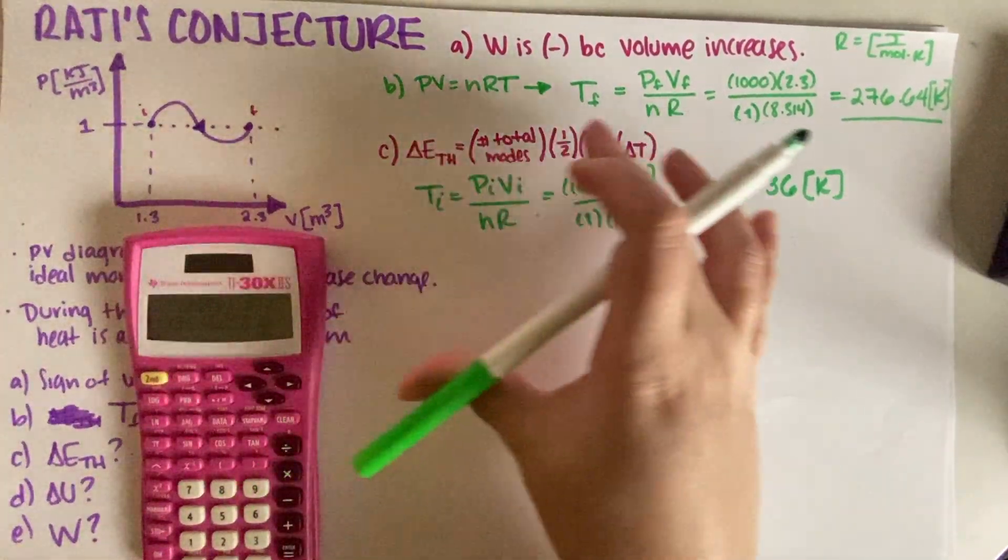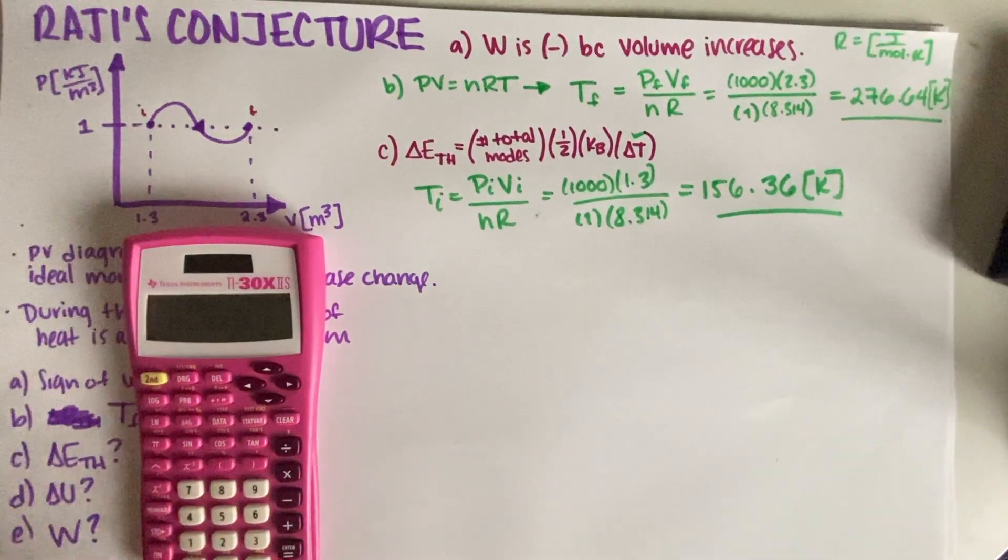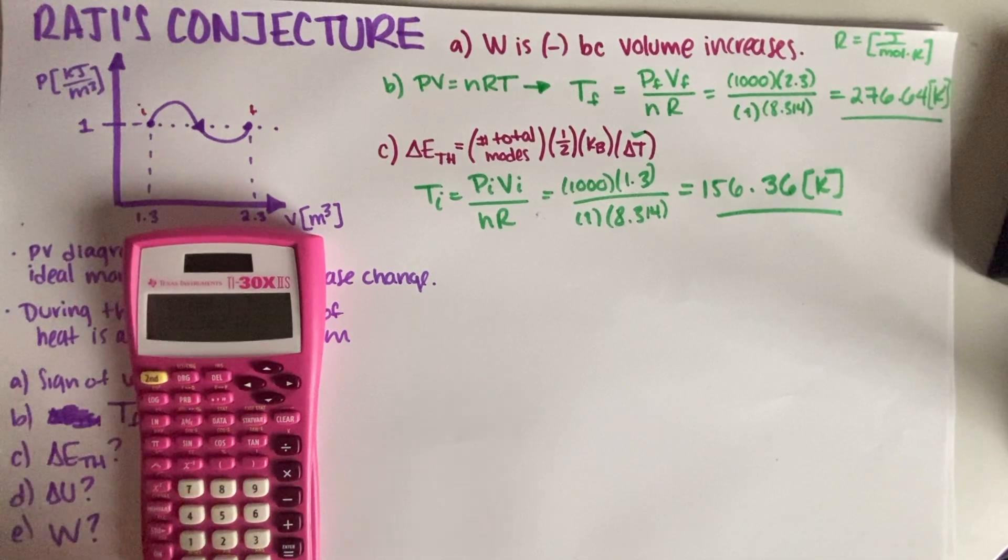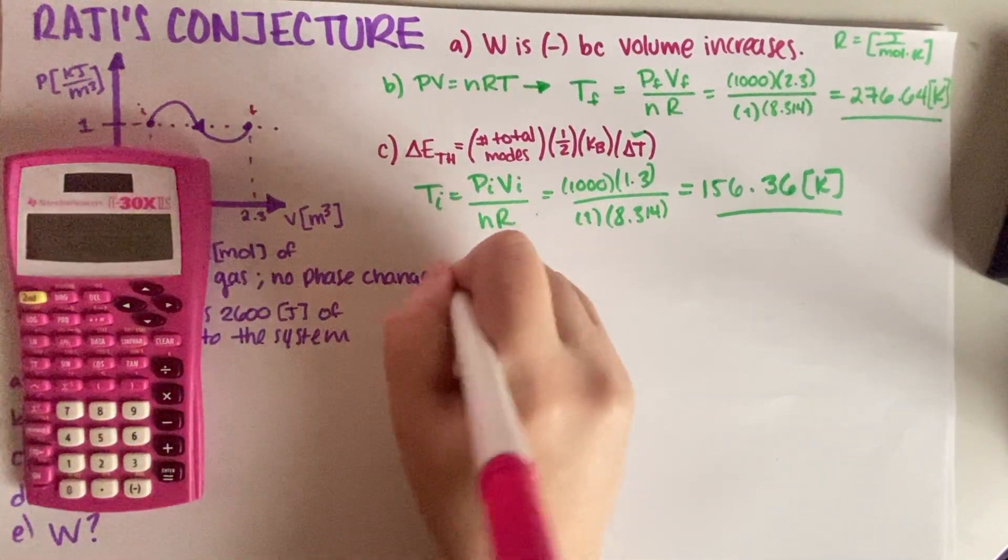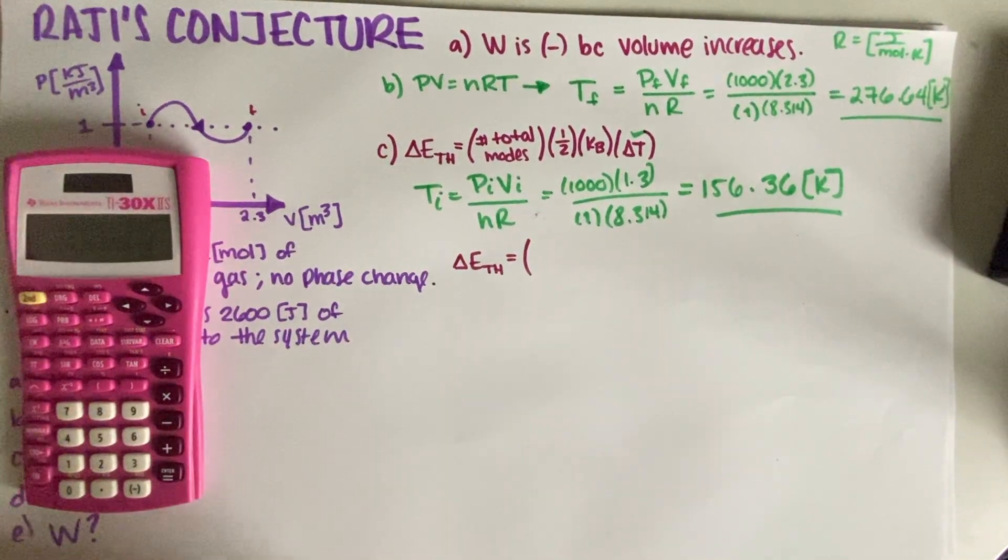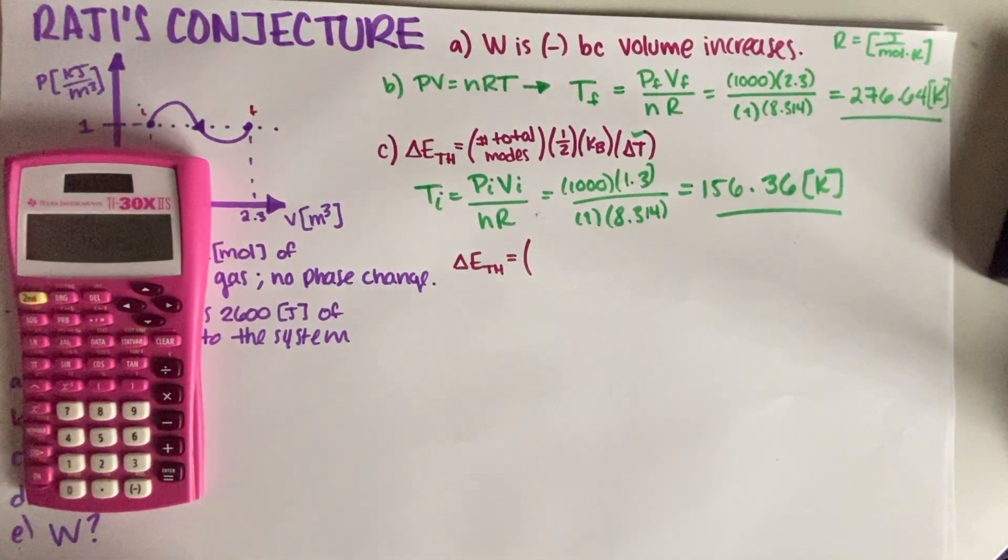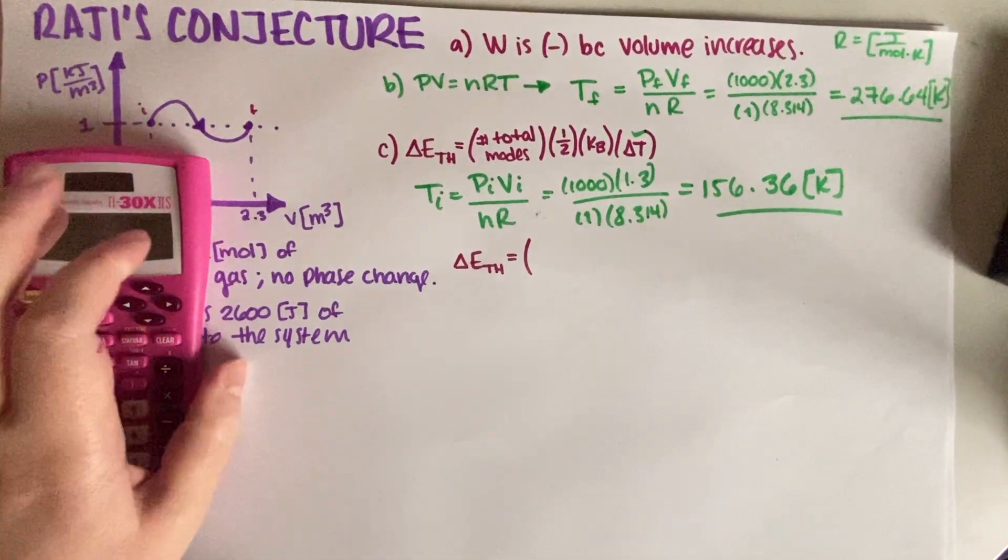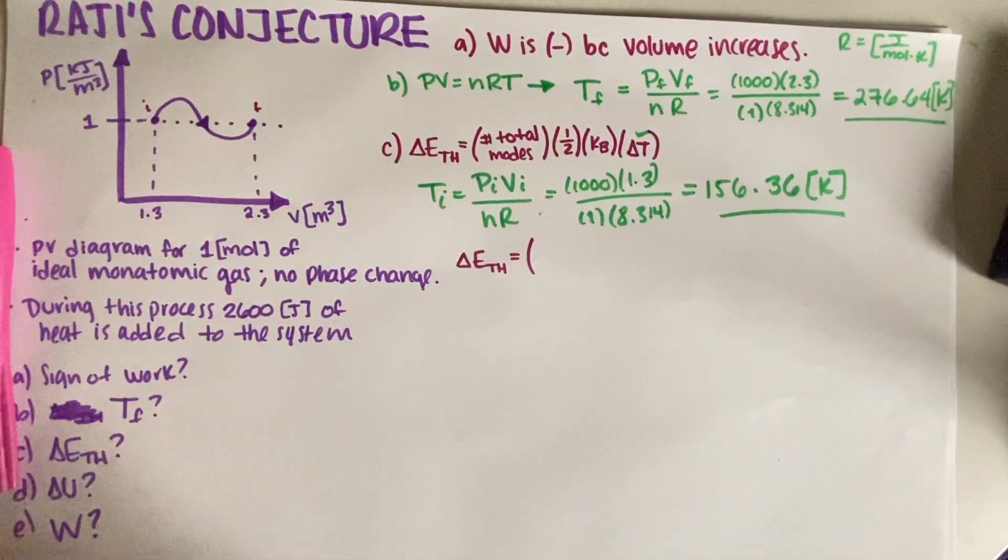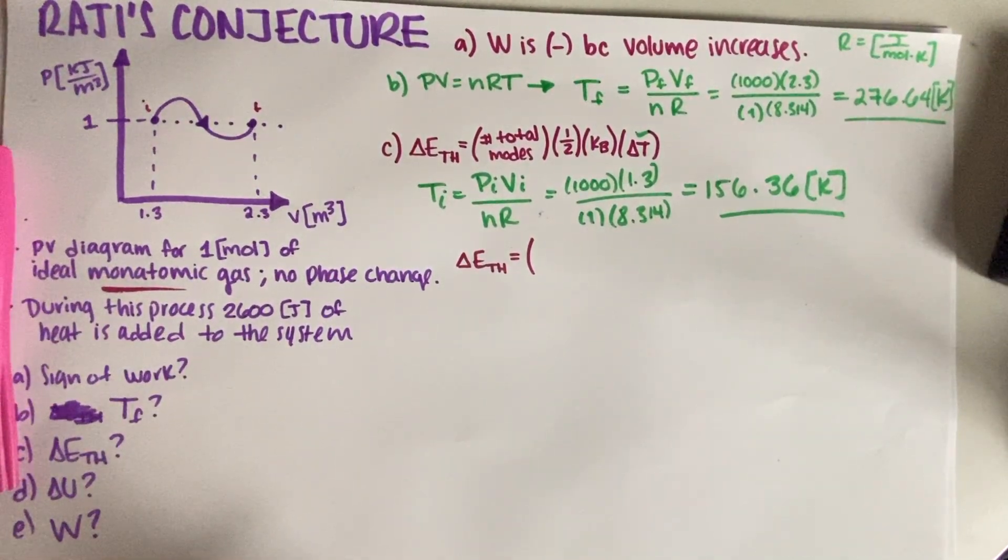And then this is equal to, if I just change this, 156.36 Kelvin. And now I just have to put everything, these two over here, and we have to figure out the total number of moles, which we know how to do. So, the total number of moles, each is equal to the average number of moles per particle times the number of particles. So, in this case, the total number of moles is equal to three, because this is monatomic gas.